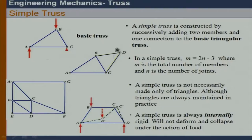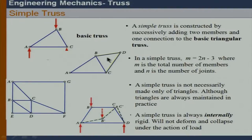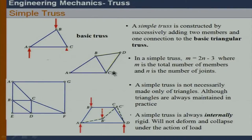A simple truss cannot be deformed under the action of any load. For example, if this is not a simple truss, we can clearly see that if we apply a load, since the ends are pinned, rotations are allowed about the joint and it will deform. In the case of a simple truss, if it is properly supported by at least three reactions, then we can say it is a properly rigid truss — internally rigid as well as externally rigid and completely constrained.